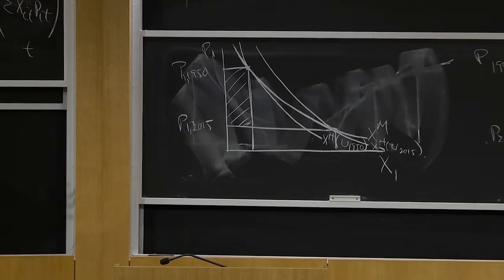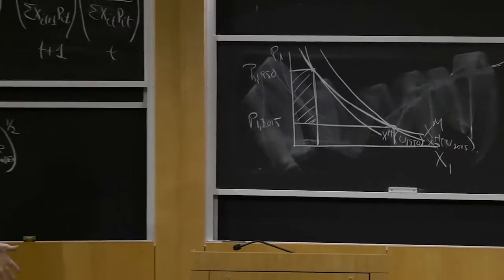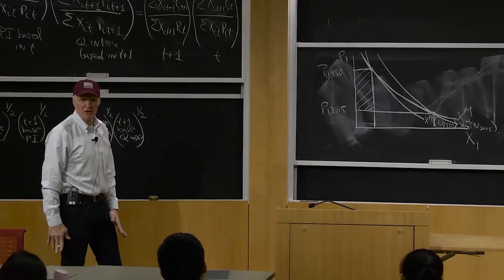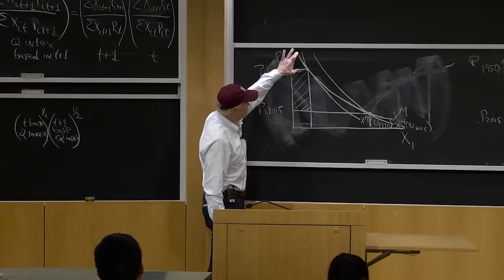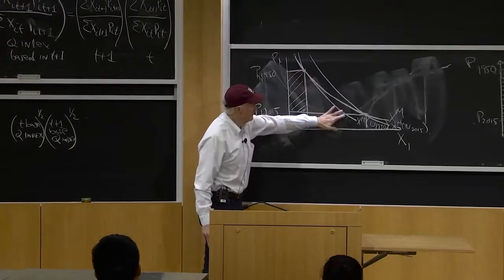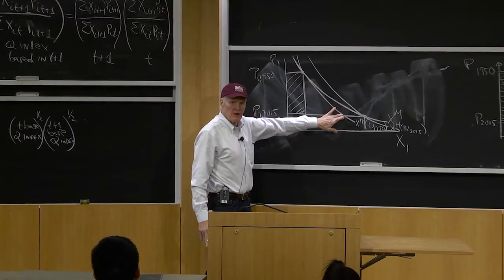And you can see this is an example where we've understated the fall in the cost of living using the Laspeyres index, because this box is smaller than even that demand curve.